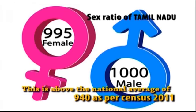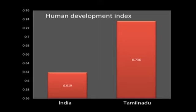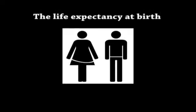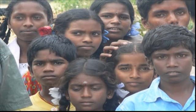This is above the national average of 940 as per Census 2011. India has a human development index of 0.619, while the corresponding figure for Tamil Nadu is 0.736, placing it among the top states in India. The life expectancy at birth for males is 65.2 years, and for females it is 67.6 years. The dominant ethnic group of the state is the Tamil population.